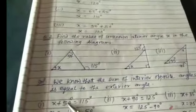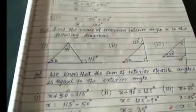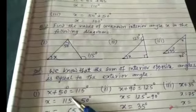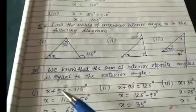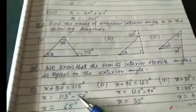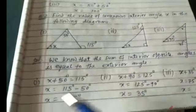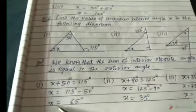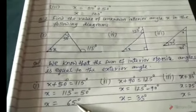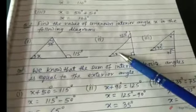Therefore x plus 50 degrees equals 115. Transferring 50 to the right side gives minus 50, so x is equal to 65 degrees.